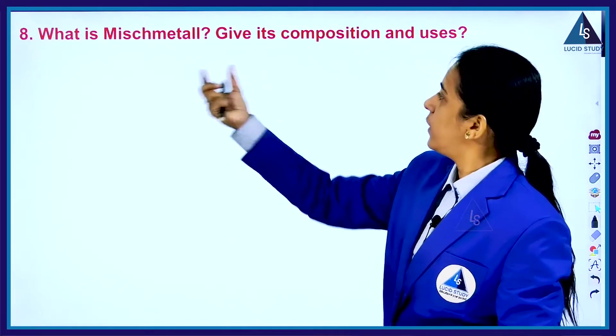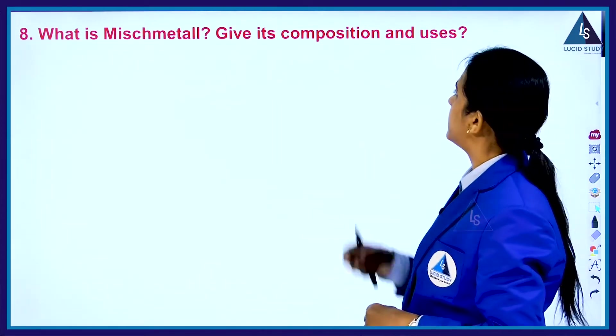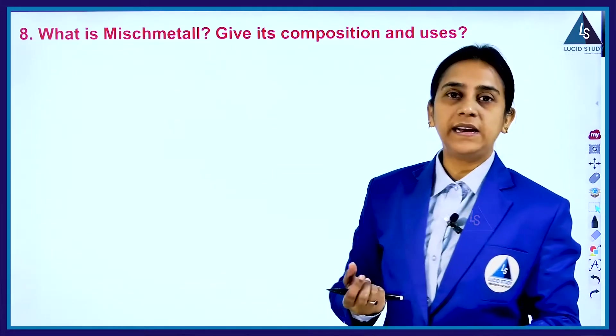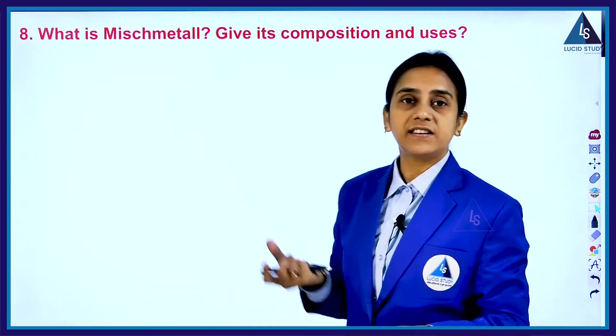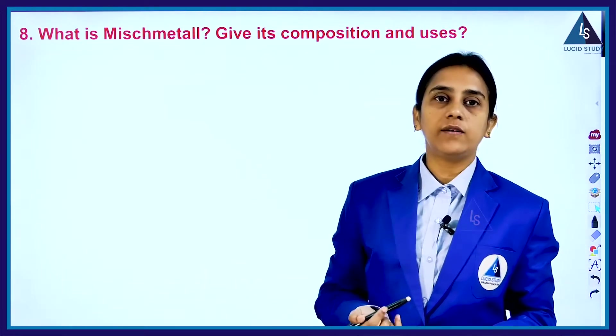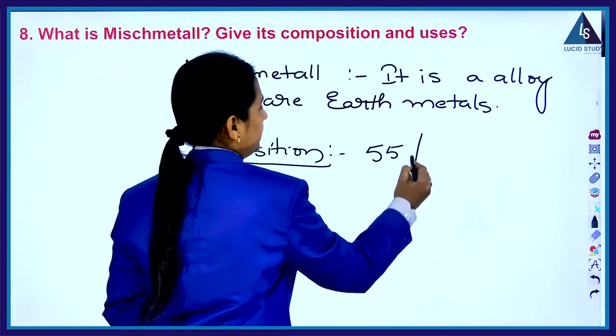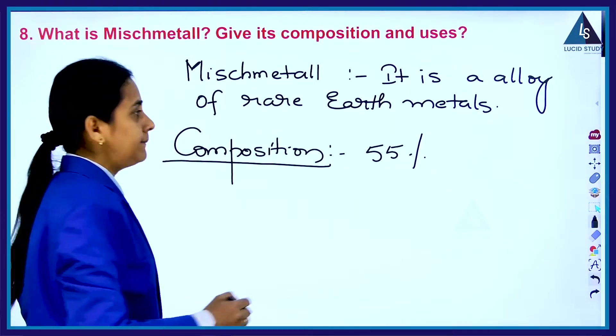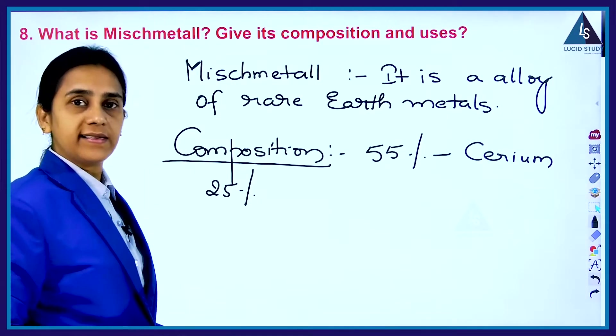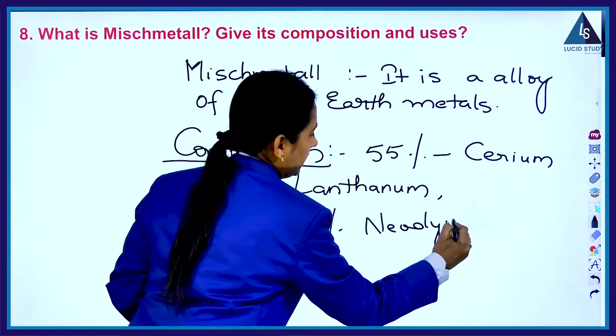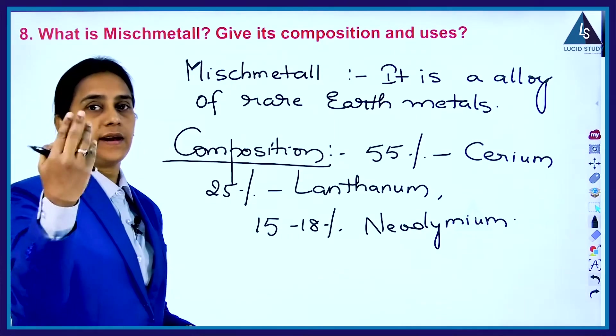The next question is: What is misch metal? Give its composition and uses. In Germany, misch metal means mixed metals and it is an alloy of rare earth metals. The composition is 55 percent cerium, 25 percent lanthanum, 15 to 18 percent neodymium and other rare elements.